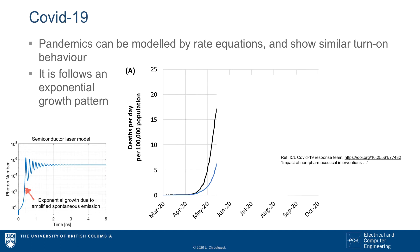In the case of a laser, a single spontaneous emission can turn into a laser having hundreds of thousands of photons. Here, the COVID-19 model predicts that thousands to millions of people may become infected if no interventions are applied.